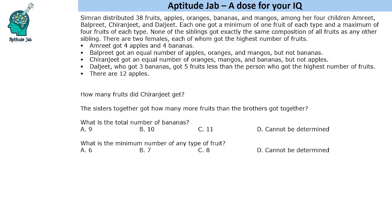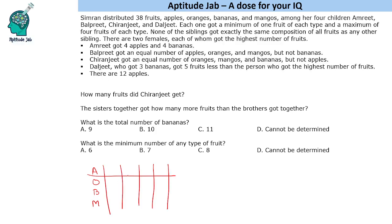We are given some information and based on it we need to find out how many fruits they got. There are four fruits — apples, oranges, bananas and mangoes — distributed among four people A, B, C and D. We will make a total column as well. The grand total is 38 fruits.